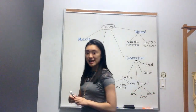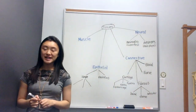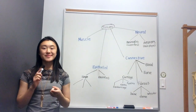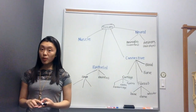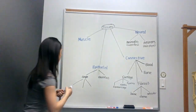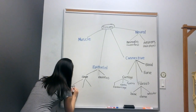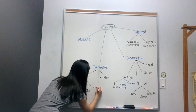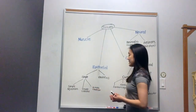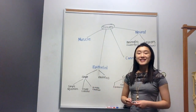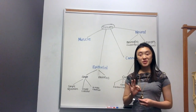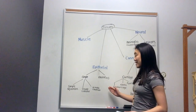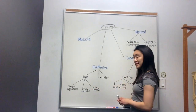Within simple epithelial tissue we can further break it down into three subcategories based on cell shape: squamous, cuboidal, and columnar. Within stratified we also break it down into the same three subcategories based on shape: squamous, cuboidal, and columnar.